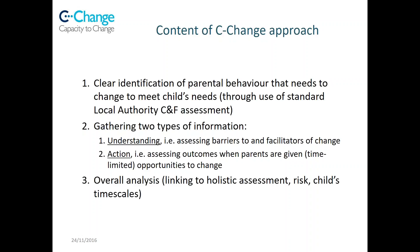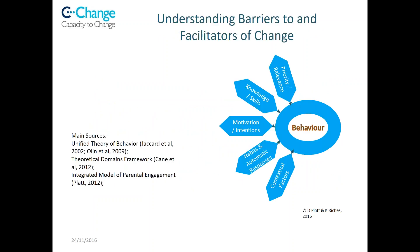At the end of the process there has to be an overall analysis, linking the holistic assessment with your understanding of risk, the child's timescales, and what you've gained about capacity to change. The first element — understanding barriers and facilitators of change — is based on a diagram developed from existing research, drawing on multiple pieces of work to pull together insights from different aspects of behaviour change theory. This is not new theory; it's a categorisation of factors affecting individuals' capacities to change.